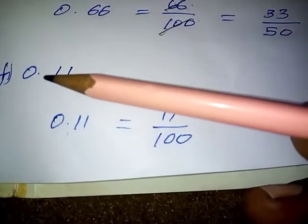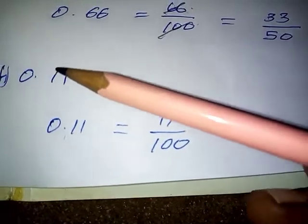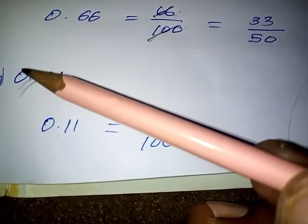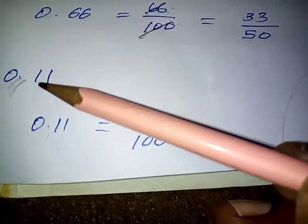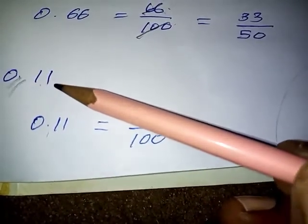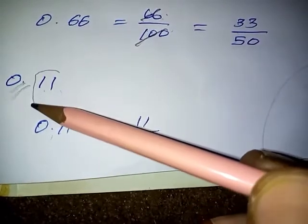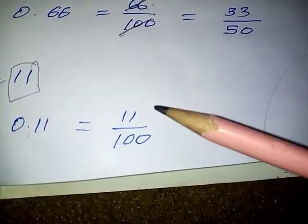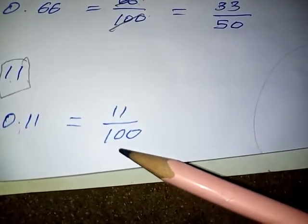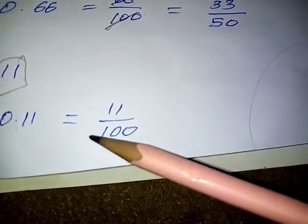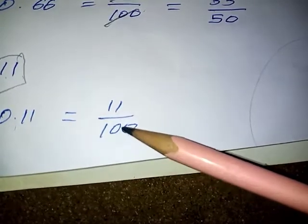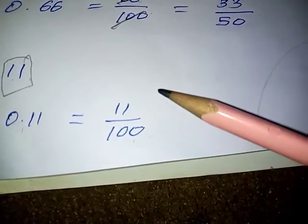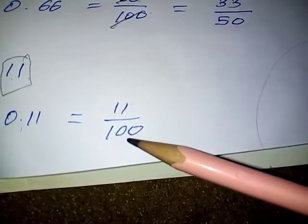Next: 0.11. In this sum, the integral part is 0 and the decimal part is in the 10th and 100th places. So the fraction value of the decimal part is 11 by 100. Here, 11 and 100 have no common factor for numerator and denominator, so the required fraction of the given decimal is 11 by 100.